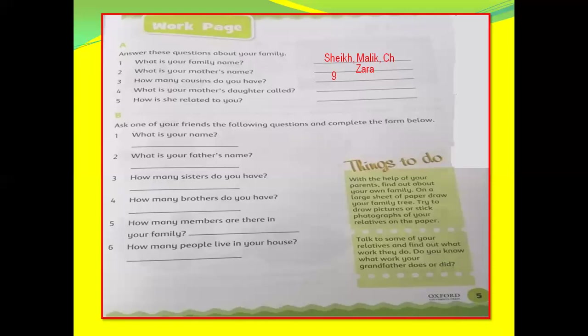Question number four: What is your mother's daughter called? We have studied about this relation. Your mother's daughter — you will call her sister. Question number five: How is she related to you? She is your sister. The daughter of your mother is your sister — maybe two daughters, three daughters — all are your sisters.